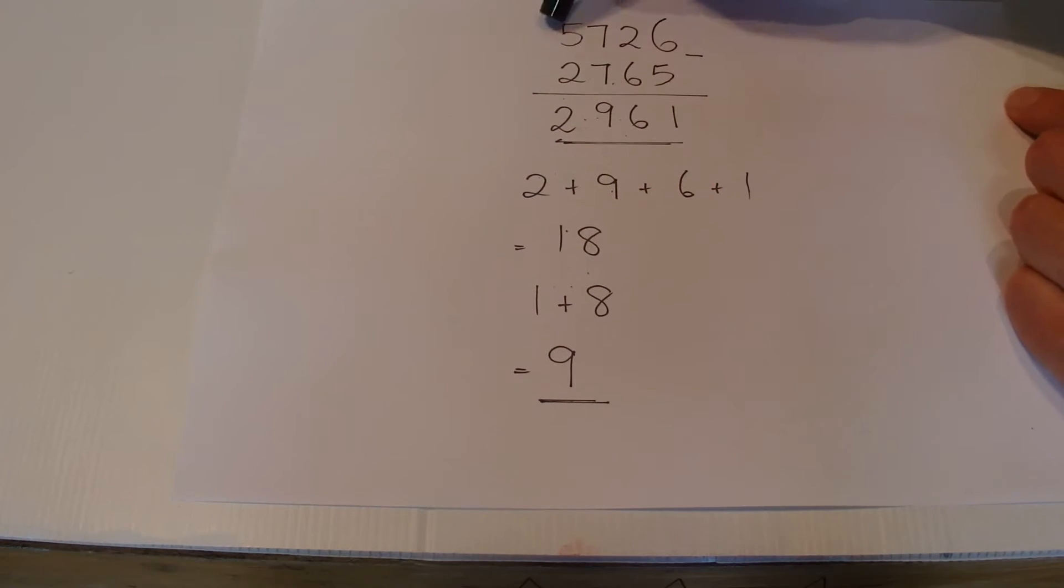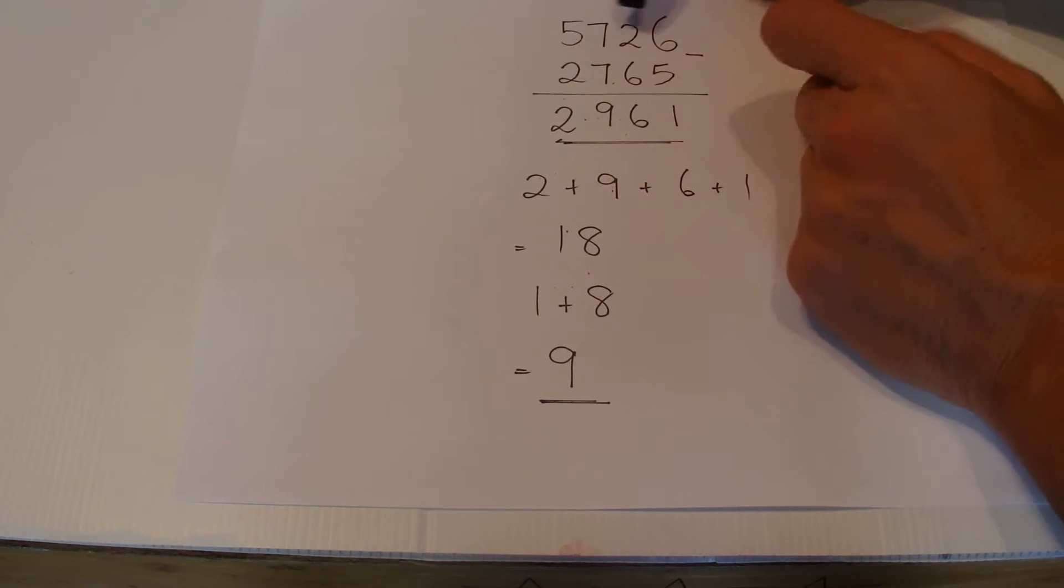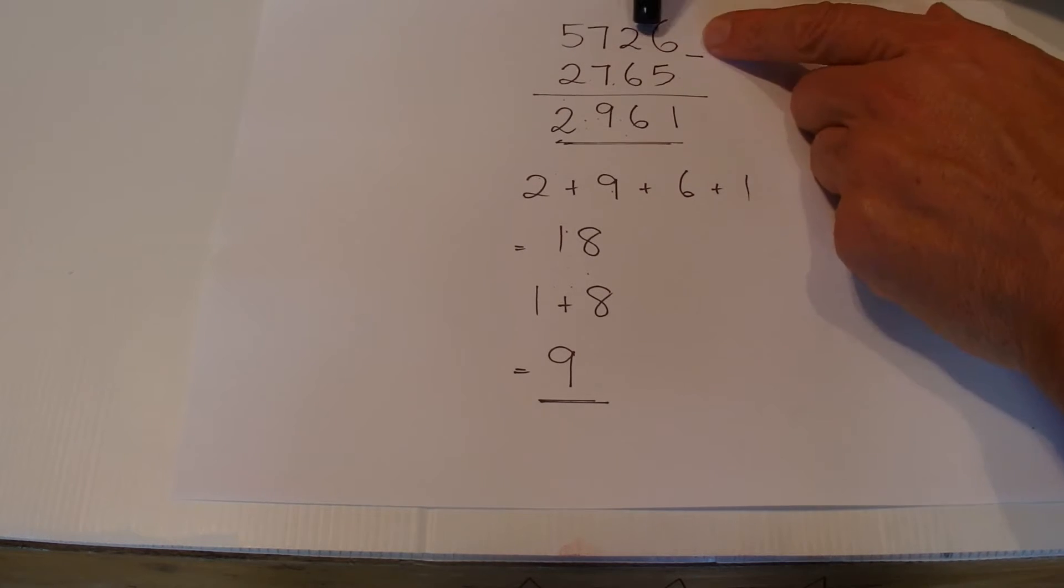To do this trick you just need to start off with a number, any number. It can have 2 digits, 3 digits, 4 digits, 5 digits—it doesn't matter how many. In this case we've got 4 digits.